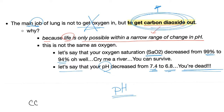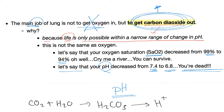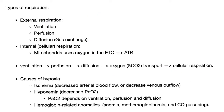Carbon dioxide plus water gives us carbonic acid, leading to acidosis — producing H⁺, the acid, and HCO₃⁻. So respiration: we have external respiration and internal or cellular. External is ventilation, perfusion, diffusion.